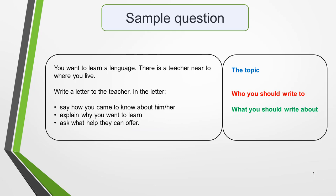Here's a sample question for a letter of request with the three parts illustrated. You want to learn the language and there's a teacher near to where you live. Write a letter to the teacher. In the letter, say how you came to know about him or her, explain why you want to learn, and ask what they can offer. The first sentence gives the topic, the second tells you who to write to, and the three bullet points tell you what to write about. Understanding the different parts of the question will help you to quickly analyse and plan your answer.